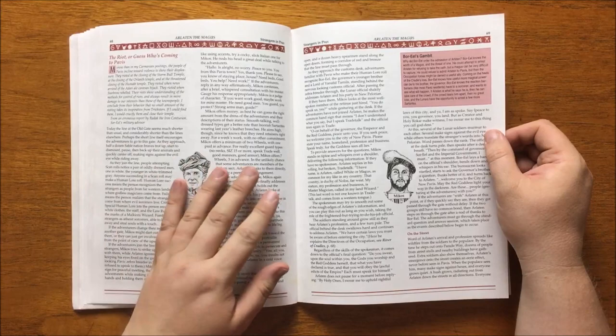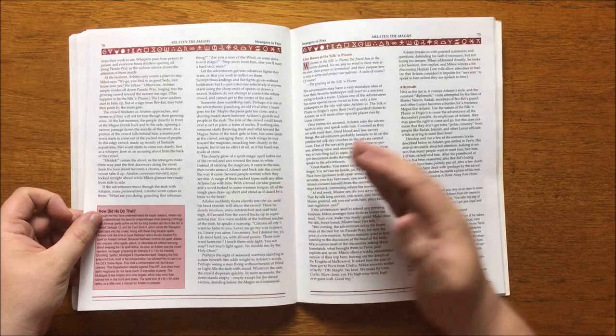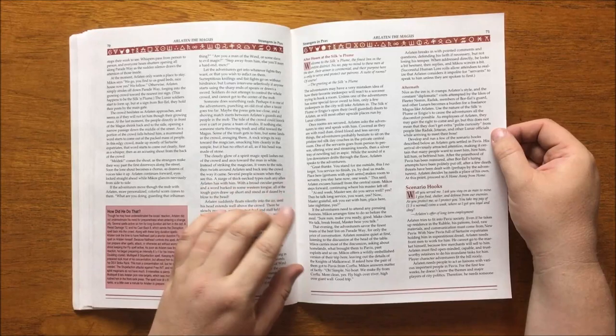It then gives some discussion on how to use Arlotton in your campaign. The first part of this is called The Riot, or Guess Who's Coming to Pavus. This is where Arlotton is introduced to the players, which discusses his entry into the city and how he scatters a mob forming around him. We even have the in-game details of how he does this. This then moves on to how Arlotton makes a base in the city and how the players slowly gain his trust.